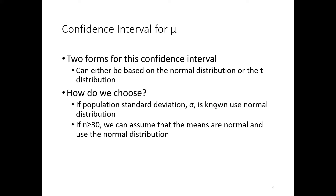So we have two forms of confidence interval — based on the normal distribution and the t-distribution. If you like to make your life easy, it's a simple rule: if you know the population standard deviation, use it, and base everything off the z-distribution. If you don't know the population standard deviation, then you have to estimate it and base everything off the t-distribution. The t-distribution has slightly fatter tails because we're estimating two things — the standard deviation and the mean — giving a greater chance that we might be off by a little bit.